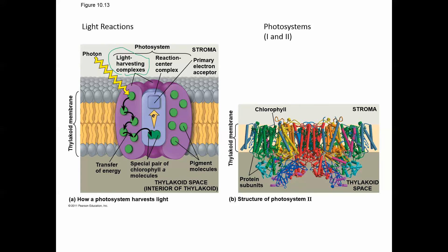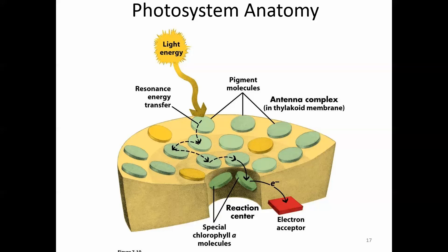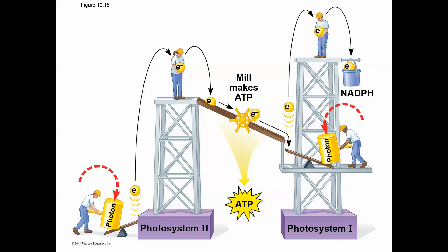There are two photosystems in a plant — photosystem 1 and photosystem 2 — both consisting of pigments, chlorophyll A and B, carotenoids, and a reaction center. Photosystem 2 is first: electrons are excited, lost to a primary electron acceptor, and then travel down an electron transport chain — just like in respiration — producing ATP. After losing much of their energy, electrons gain more energy at photosystem 1, go to another electron acceptor, and are then used to reduce NADP+ to NADPH.